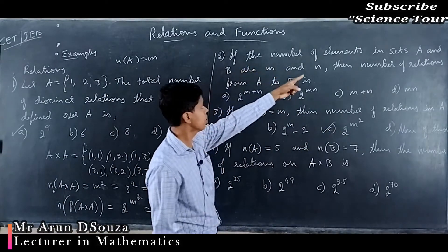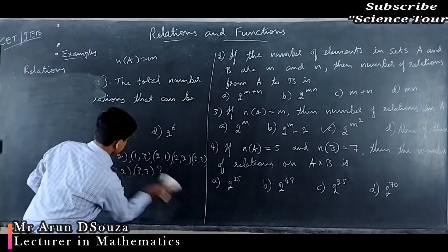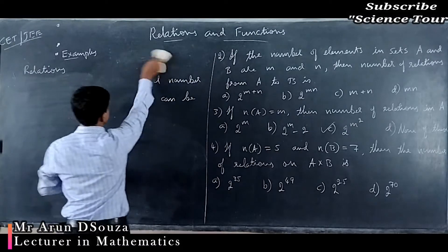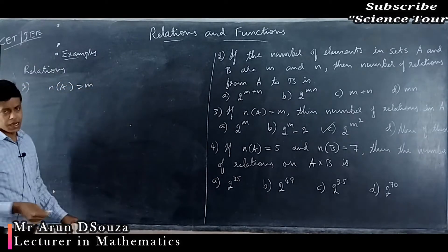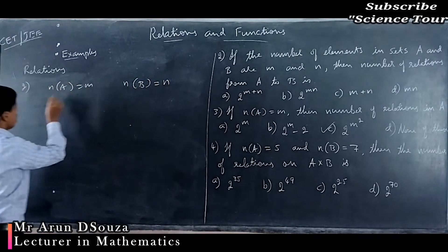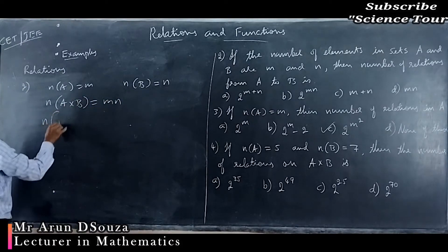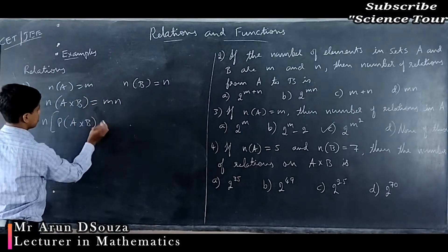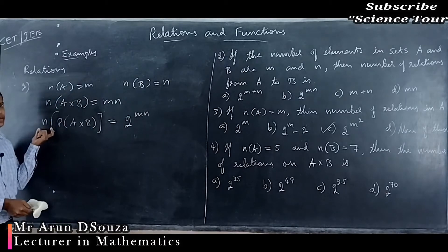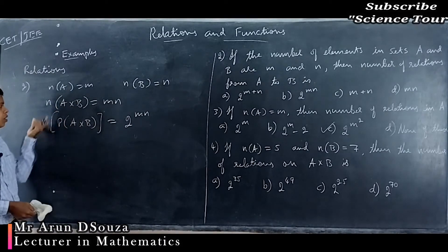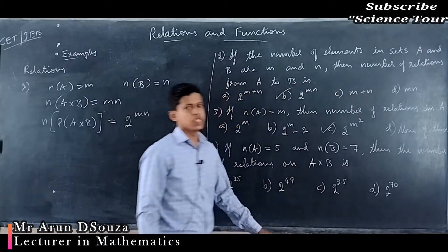Look at the second question. If the number of elements in sets A and B are M and N, then A×B will have M×N elements. The number of elements in the power set of A×B is 2 raised to M×N. Therefore the number of relations from A to B is 2 raised to M×N.